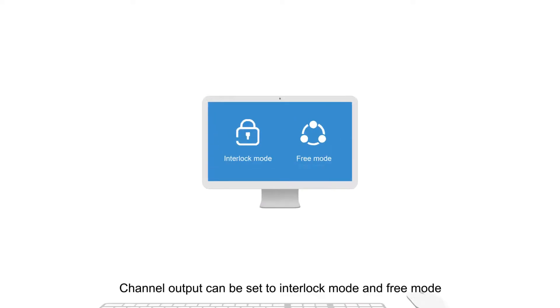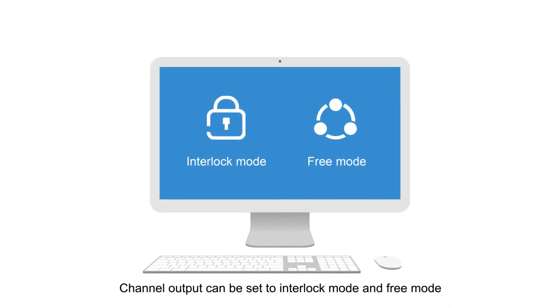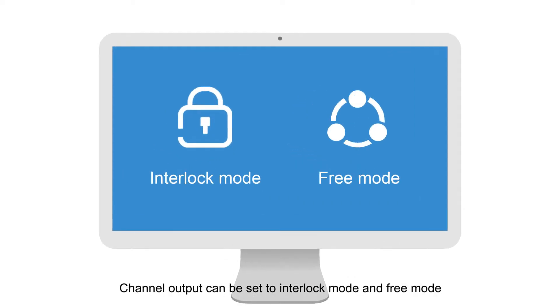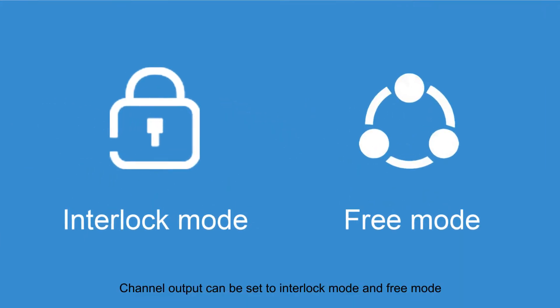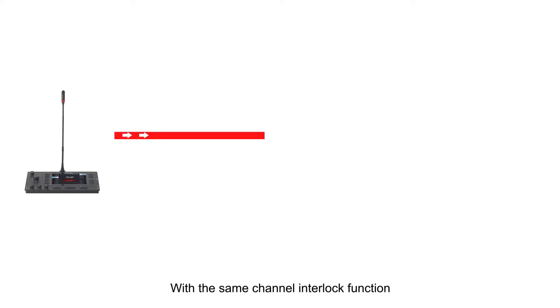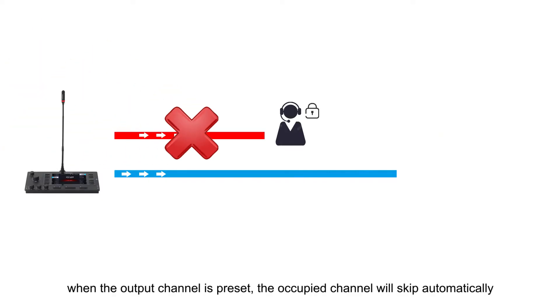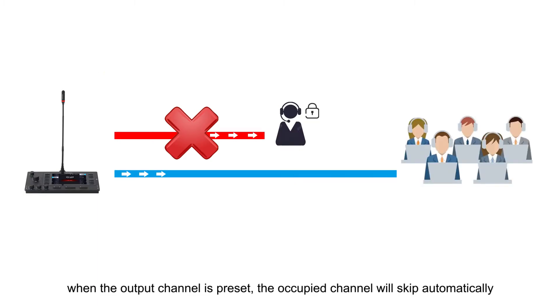Channel output can be set to Interlock mode and Free mode. With the same channel interlock function, when the output channel is preset, the occupied channel will skip automatically.